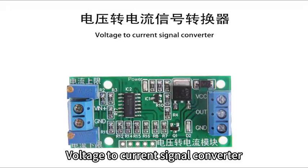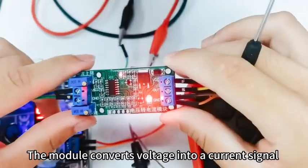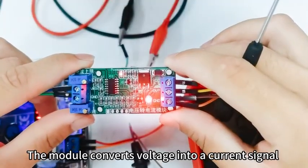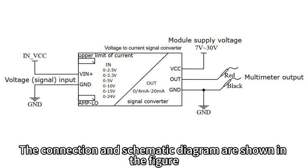Voltage to Current Signal Converter. The module converts voltage into a current signal. The connection and schematic diagram are shown in the figure.